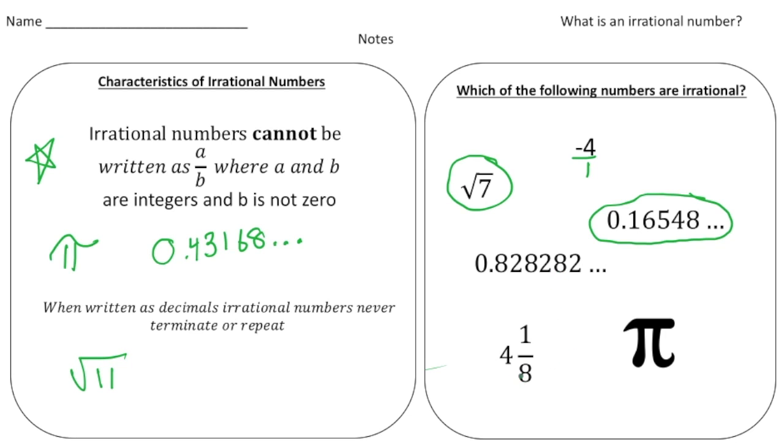Here we have the mixed number 4 and an eighth, and 4 and an eighth can be written as an improper fraction which is 33 eighths and that makes it rational. And finally, pi is the most famous irrational number of all, so this certainly is irrational.